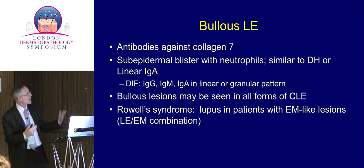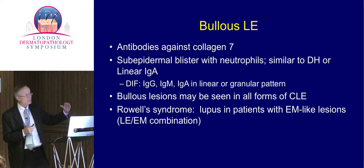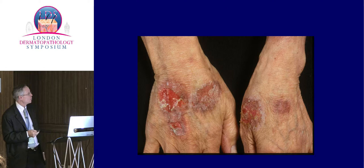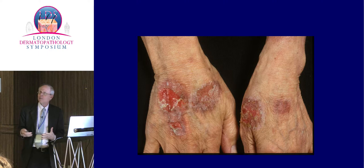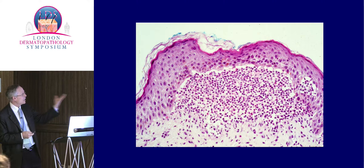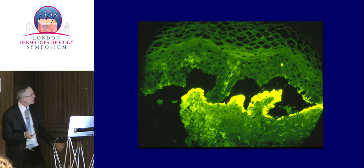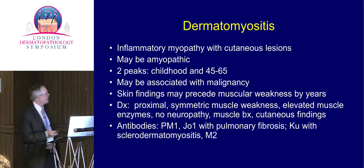Bullous lupus — you get a subepidermal blister with neutrophils, similar to linear IgA disease or dermatitis herpetiformis, and immunofluorescence is positive in most cases. Sometimes we see patients with bullous lesions and so-called Rowell syndrome — a combination of erythema multiforme and lupus erythematosus. These patients are often ill, often after sun exposure or steroid discontinuation. Histologically it looks like linear IgA bullous dermatosis or dermatitis herpetiformis with a dense collection of neutrophils and subepidermal blister, with strongly positive immunofluorescence.